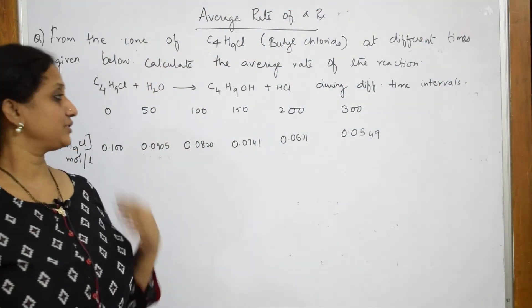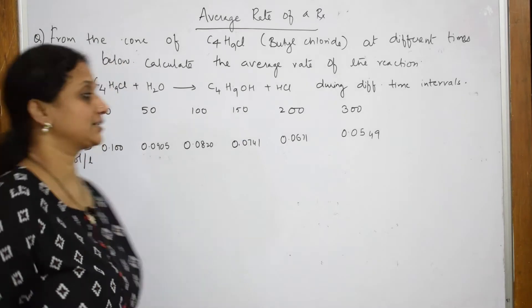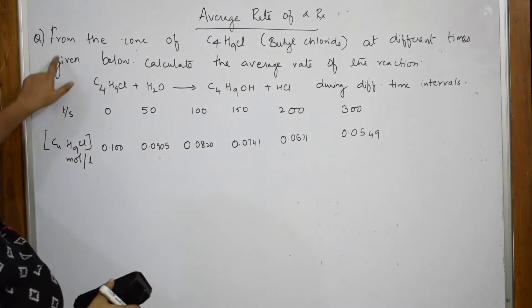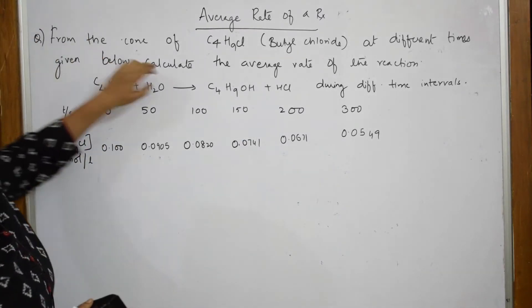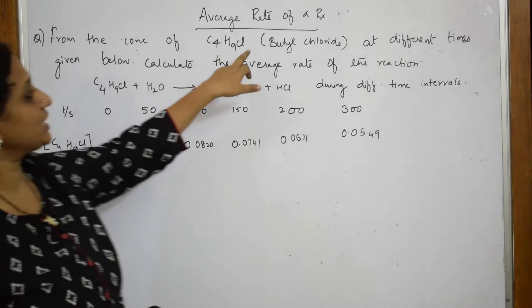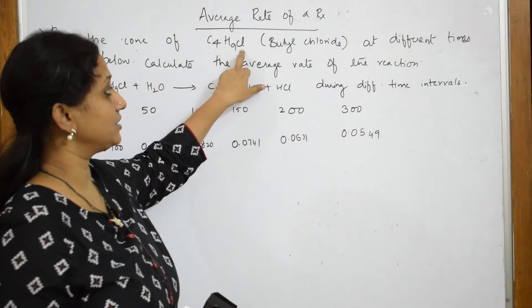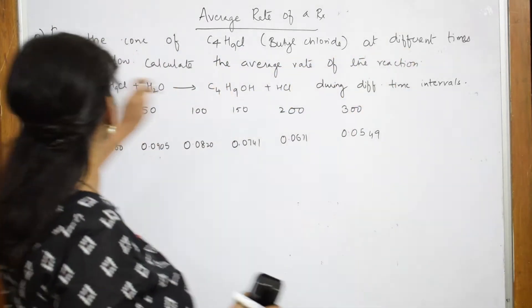Let us do the next question based on average rate of reaction. Let us read this question. From the concentration of butyl chloride, they have given us butyl chloride at different times.